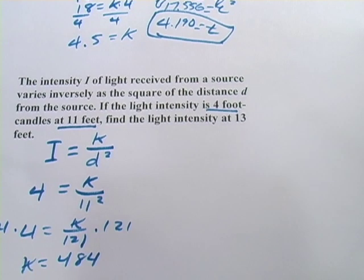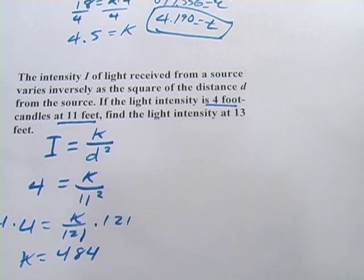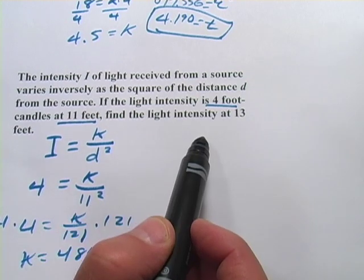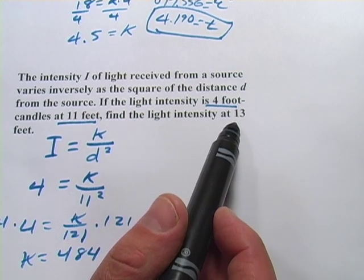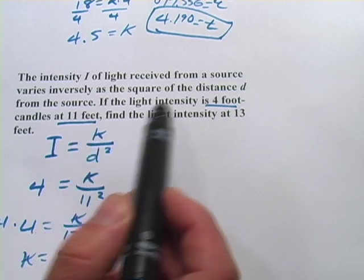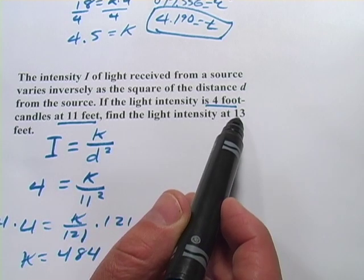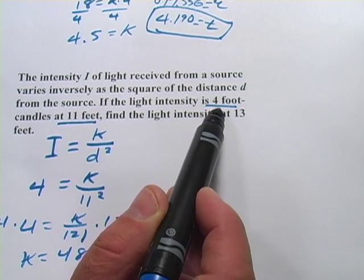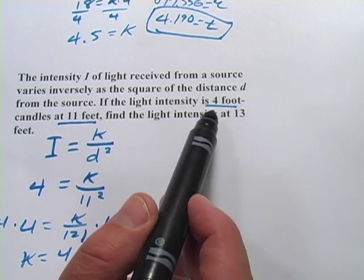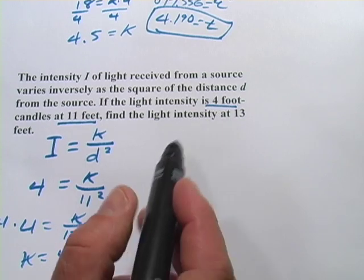Going off the bottom here. All right, so that's the first part. We found K. The second part is to find the light intensity at 13 feet. And let's stop a minute and predict. If we're 11 feet away and we have four foot candles, if we're 13 feet away, which is more, it should be dimmer than four foot candles. So we're looking for some number less than four. Let's see if we get that.